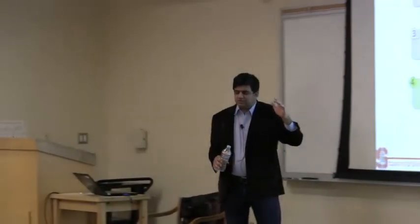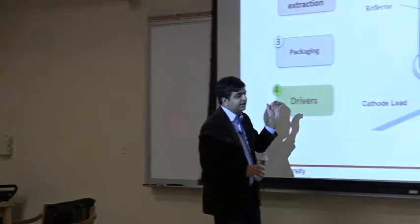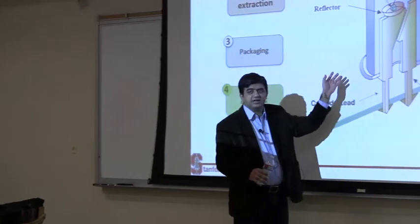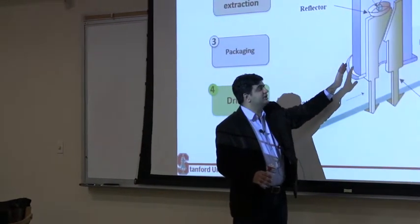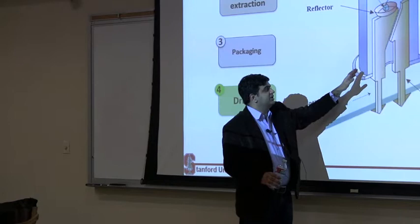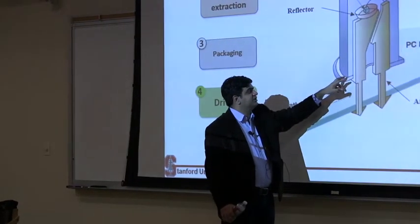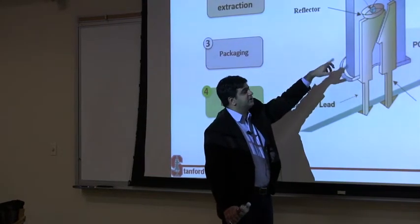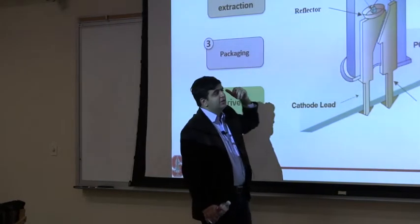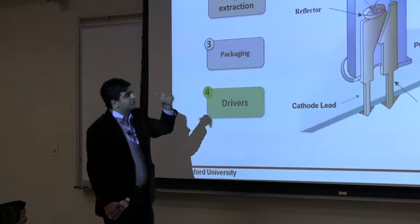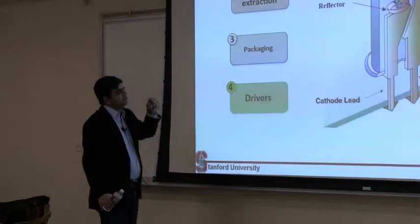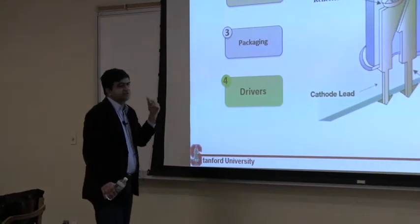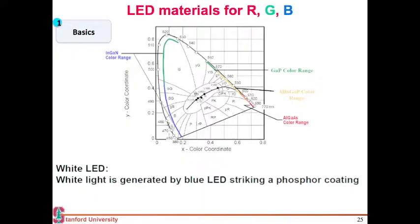Anti-reflective coating, which we talked about in solar, works both ways. If you have light coming in, it helps that light to get in, but if you have light coming from inside, if you have a material in between which has an intermediate refractive index between your semiconductor and atmosphere, it also helps that light to get out. If anything works in trapping the light, it also helps the light to escape.